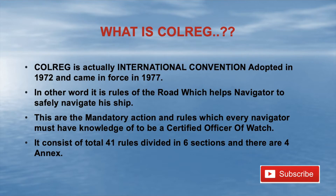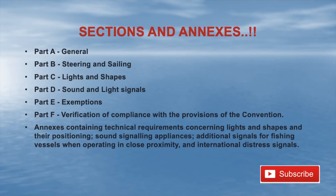COLREGS consists of 41 rules divided into six sections. We'll be discussing all those sections and rules in upcoming videos. Today I'm just talking about an introduction to COLREGS. There are also four annexes associated with the convention.